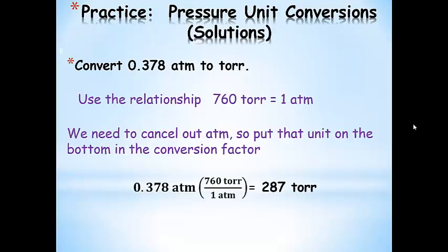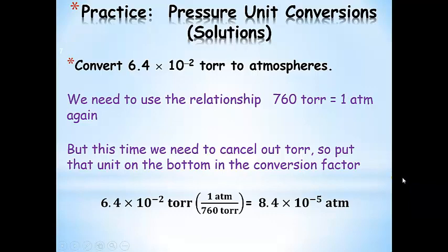For the first one, we're going to use the relationship 760 torr equals one atmosphere. We need to cancel out atmospheres, so we put that on the bottom of the conversion factor. So 0.378 atmospheres times (760 torr / 1 atmosphere) gives us 287 torr. We can see our atmospheres cancel, and we end up in torr.